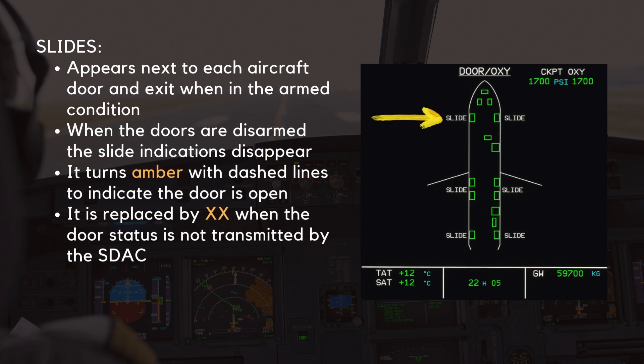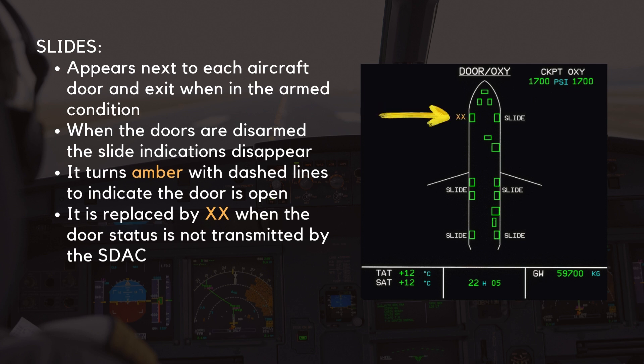The slide indication appears next to each aircraft door and exit when in the armed condition. When the doors are disarmed, the slide indications disappear. It turns amber with dashed lines to indicate the door is open, and is replaced by two amber crosses when the door status is not transmitted by the S-Stack.